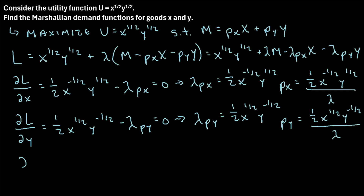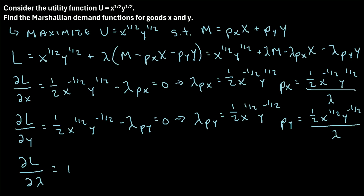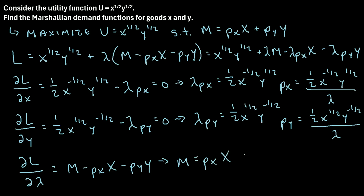Lastly, we take the derivative of the Lagrangian with respect to lambda. The derivative gives us m minus p_x times x minus p_y times y, and solving for m, we find m equals p_x times x plus p_y times y.